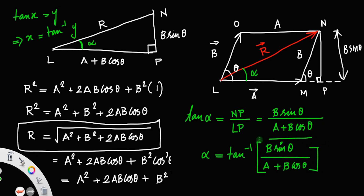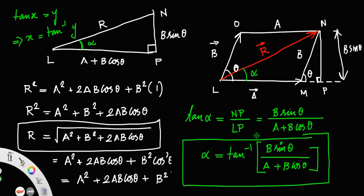So that is the angle this resultant makes with a, which gives its direction. The resultant has a magnitude R equal to the square root of A squared plus B squared plus 2AB cos theta, and a direction alpha equal to tan inverse of B sin theta divided by A plus B cos theta, where A and B are the magnitudes of the two vectors and theta is the angle between them.